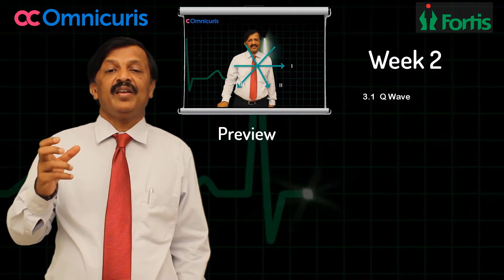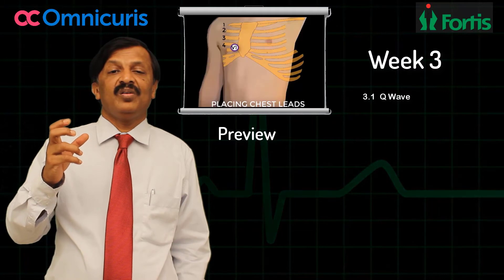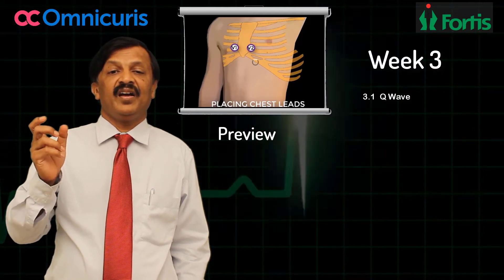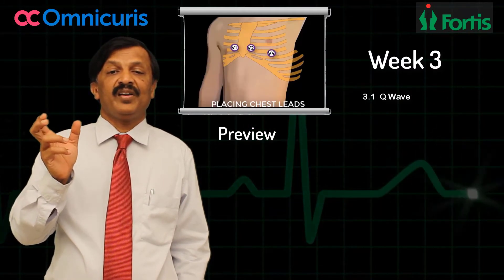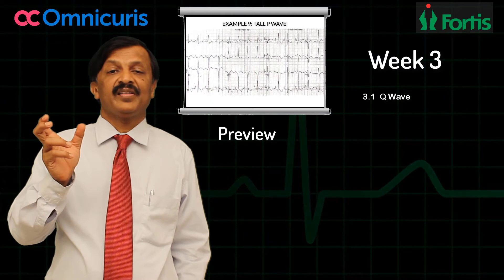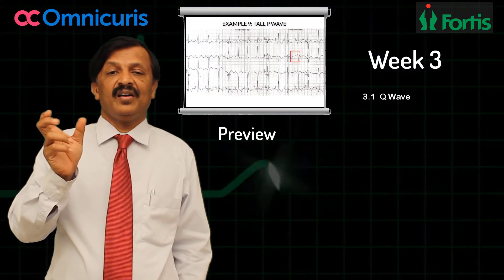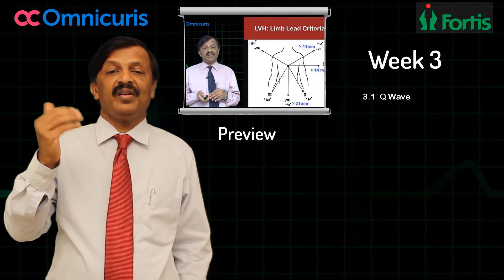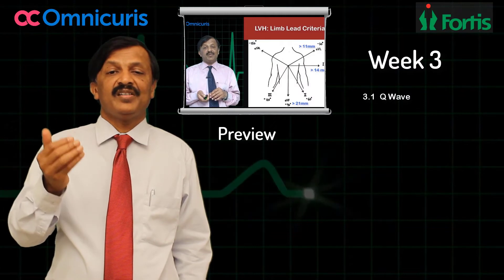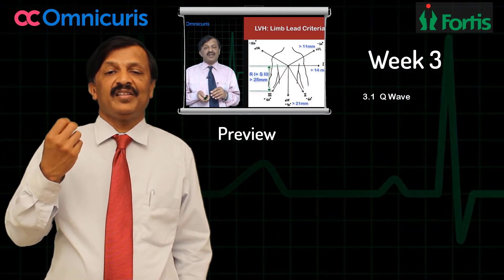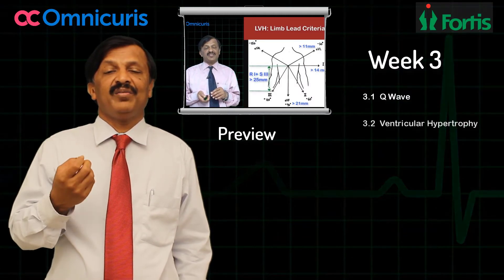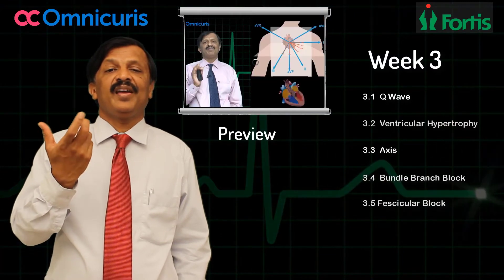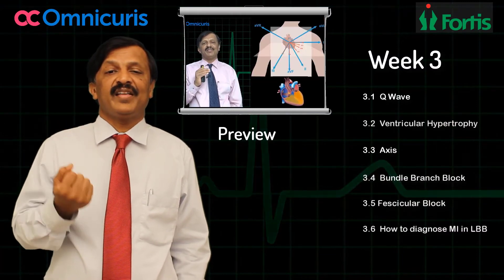In the third week we are going to look at the QRS interval. The QRS complex is the tallest complex in the ECG. We will cover how Q waves are generated, what happens when there is ventricular hypertrophy, what happens when there is a bundle branch block, and how to calculate the QRS axis.